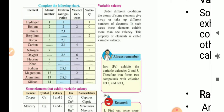Carbon: atomic number 6, electron configuration 2,4, valence electrons 4, valency 4. Nitrogen: 7, electron configuration 2,5, valence electrons 5, valency 3. Oxygen: atomic number 8, configuration 2,6, valence electrons 6, valency 2. Fluorine: 9, configuration 2,7, valence electrons 7, valency 1. Neon: atomic number 10, electron configuration 2,8, valence electrons 8, valency 0.